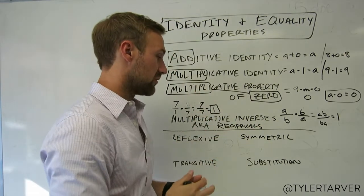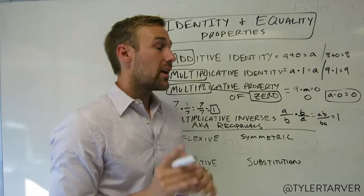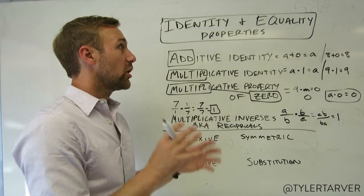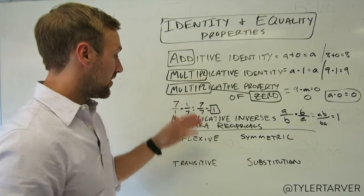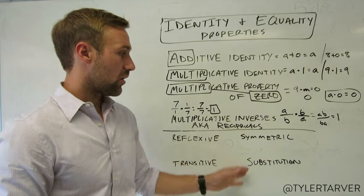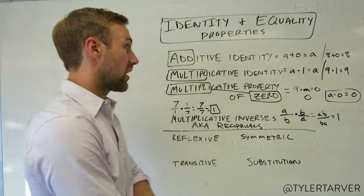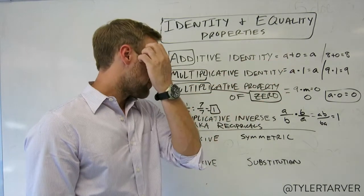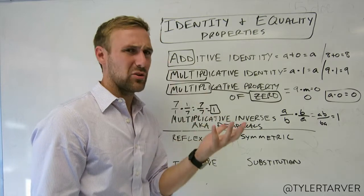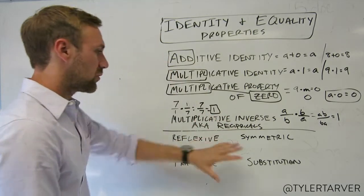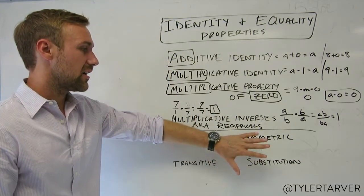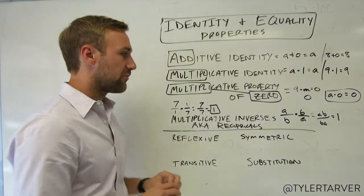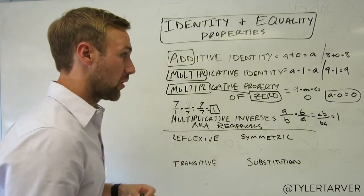Now let's talk about equality properties. These are your four major equality properties. You hardly ever use them — you might use them when doing a proof — so let's look at the main ones.